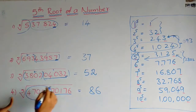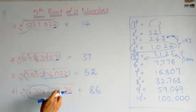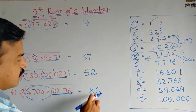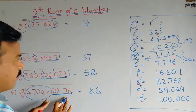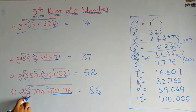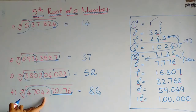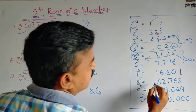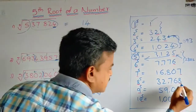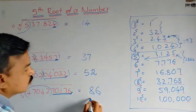In the fourth example, we again make two groups. The first group of five digits ends with 6, so we write 6 in the units place — because a number ending in 6 has its fifth root also ending in 6. The second group is 47,042. It lies between 32,768 and 59,049. The smaller fifth power is 32,768, whose fifth root is 8. So we write 8 in the tens place. The answer is 86.